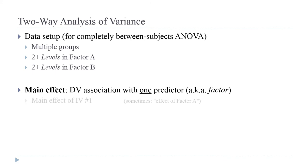The main effect of one variable is the association between the dependent variable and one predictor — in other words, the variability among the means associated with that variable's levels.